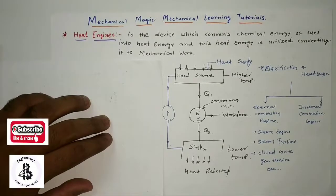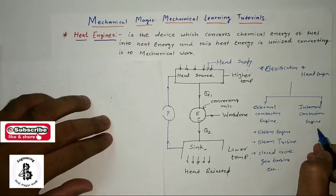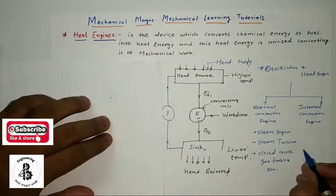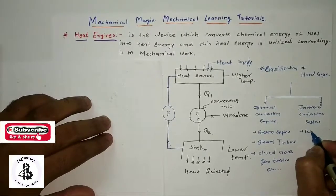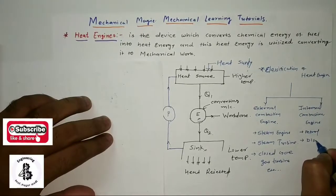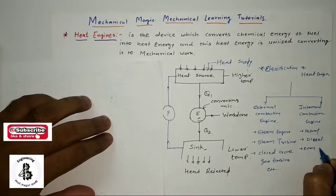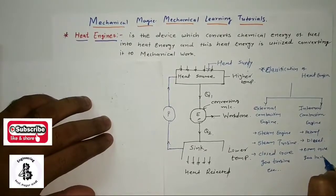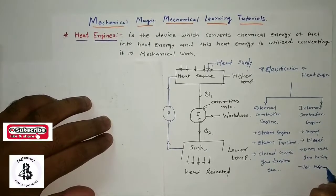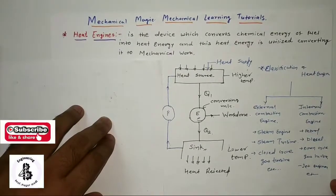So basically the combustion takes place outside of the vessels. So in case of the internal combustion engine, or you can say simple way, IC engines, so here generally petrol, diesel, open cycle gas turbines, some of the jet engines, so that will be having an example of an IC engines.